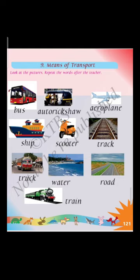Dear students, do you know early humans used to go from one place to another on foot? Later they started using animals like horse and elephants for moving from one place to another. Nowadays we go from one place to another by different means of transport. These means of transport are also used to carry goods. They can be used on land, water or air.